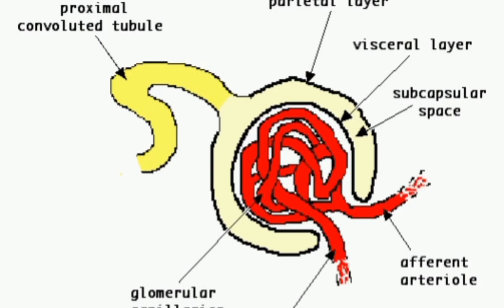The glomerulus is actually formed from the entry of the afferent arteriole and exit of the efferent arteriole. The afferent arteriole of more diameter carries blood for filtration, which divides into fine branches that unite again and leaves the glomerulus as the efferent arteriole of less diameter. Because of the narrower outlet, pressure is exerted in the glomerulus and it acts as a filtration unit. Bowman's capsule is lined by a single layer of squamous epithelial cells called podocyte cells. There are fine pores between the podocyte cells to allow the passage of materials filtered out of the glomerulus.